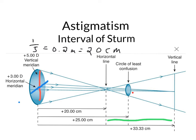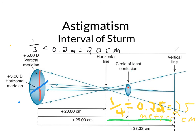The way you find this circle of least confusion is just the midway point between 3 and 5. The midway between 3 and 5 is 4. So you take 1 over 4 and you get 25 centimeters. The circle of least confusion is 25 centimeters away from the lens. Hopefully that helps.